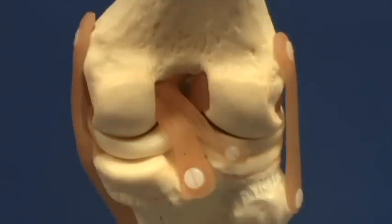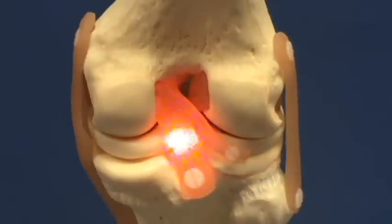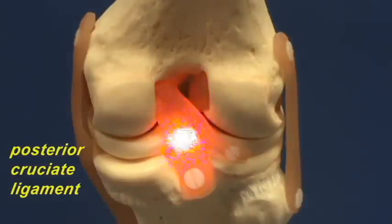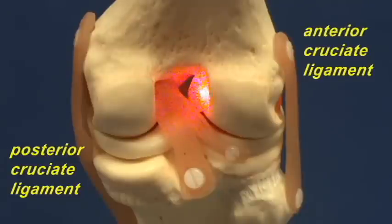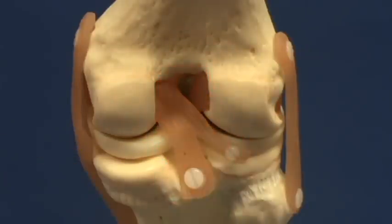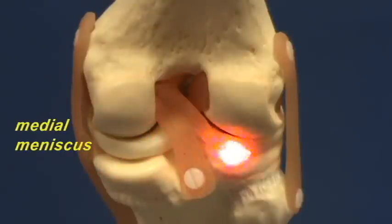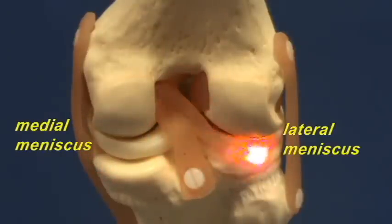Here is a view of the posterior side of the knee joint. You can better see the posterior cruciate ligament right over here, and right over here is the anterior cruciate ligament. Some other structures, just to review, include the medial meniscus and the lateral meniscus. You can see a ligament going from the lateral meniscus over here to the femur.